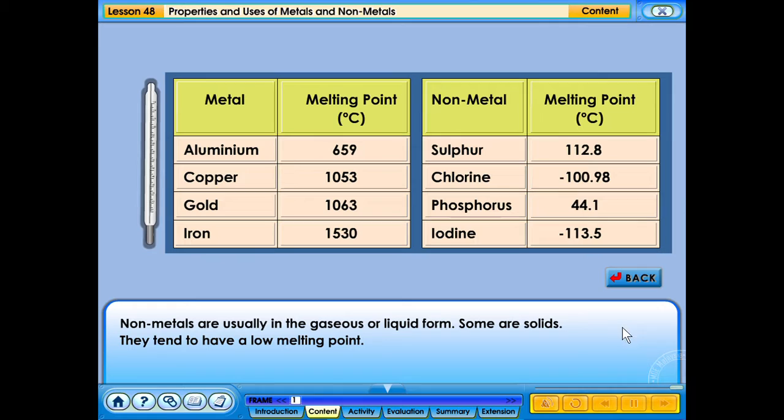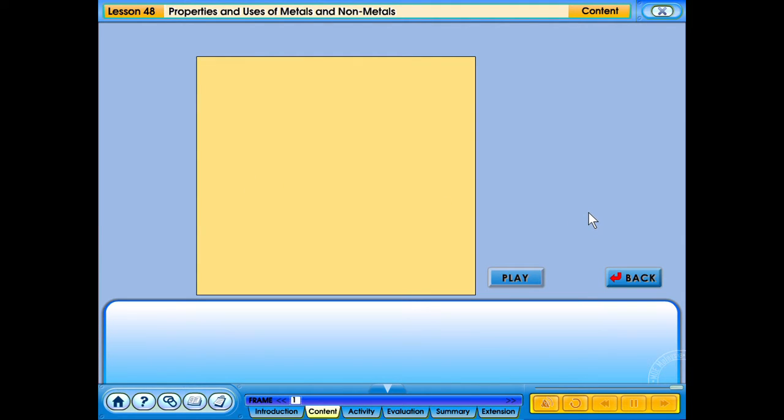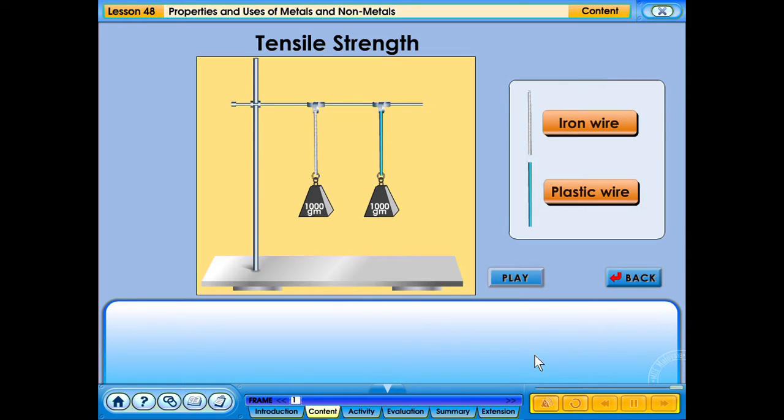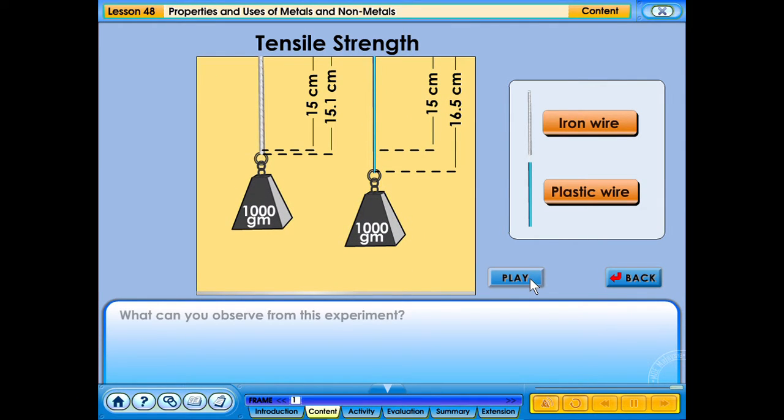Tensile strength. Metals are hard and strong. They can be stretched if the force applied is big. Click the play button to test the tensile strength. What can you observe from this experiment? Plastic wire stretches more than the iron wire when the same force is applied. What can you conclude from this experiment? Metals have a higher tensile strength compared to non-metals.